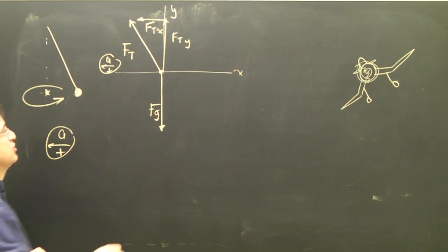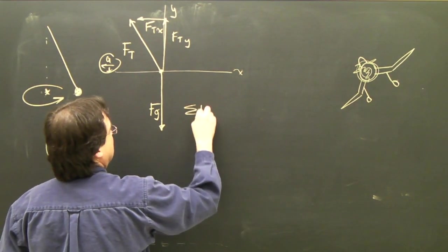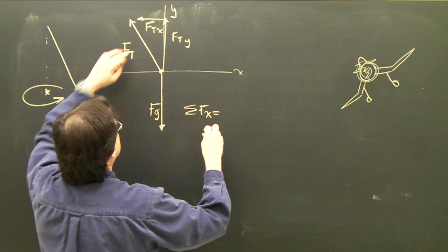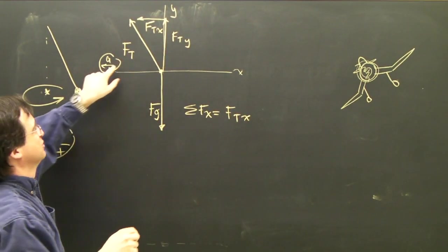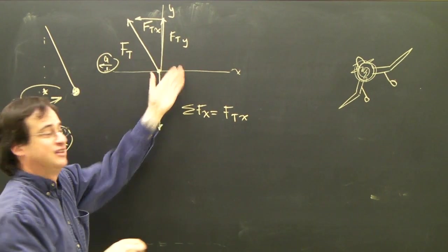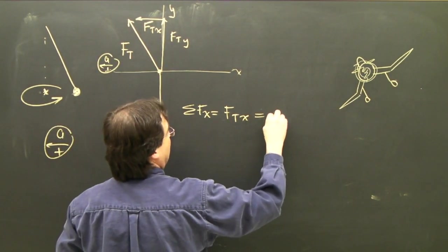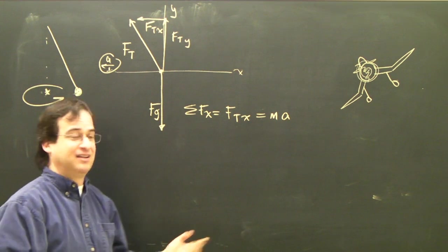Now, I want to find the forces in the x-direction. Sum of the forces in the x-direction are ft,x. It's positive because positive is towards the center. There's nothing else in the x-direction, so that's going to equal ma. But again, it's going in a circle.